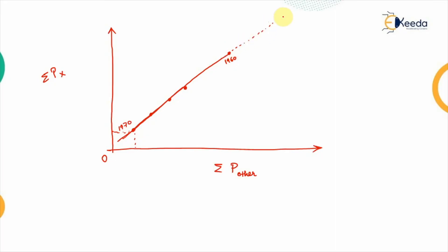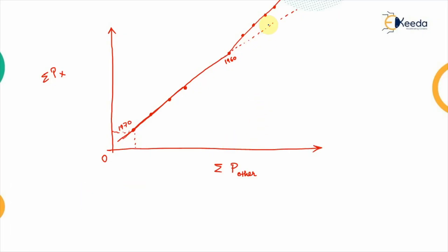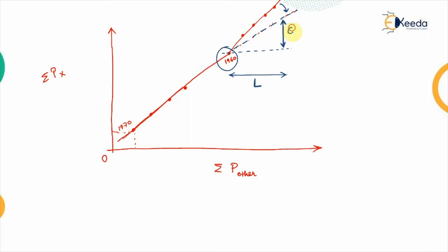After 1960, the line should have continued as a straight line, but the data indicate a different path — showing inconsistency. To remove this error using the double mass curve technique, we need to shift the line for the period beyond 1960 onto the dotted (corrected) line. The length of the time base remains the same; only the y-axis component changes.